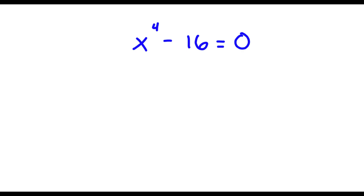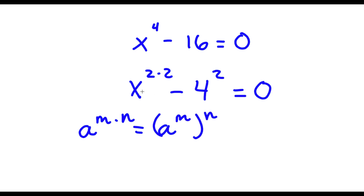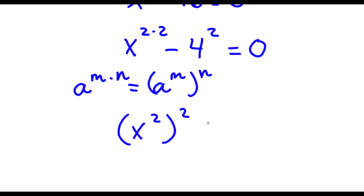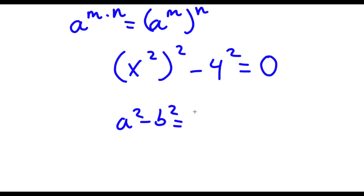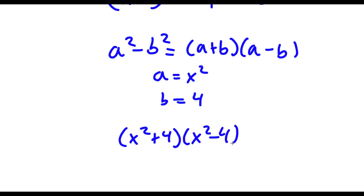Alright, so I have x to the power of 4 minus 16 is equal to 0. Now x to the power of 4 is the same thing as x to the power of 2 times 2, because 4 is 2 times 2. And 16 is the same thing as 4 to the power of 2. So I have x to the power of 2 times 2 minus 4 to the power of 2 equals 0. Using the rule a to the power of m times n equals a to the power of m, to the power of n, I write this as x squared to the power of 2. Then using the difference of squares — a squared minus b squared equals a plus b times a minus b — with a equal to x squared and b equal to 4, I get x squared plus 4 times x squared minus 4 equals 0.